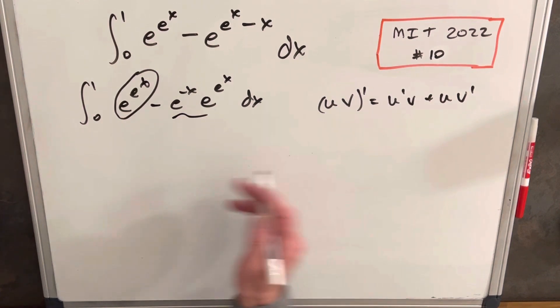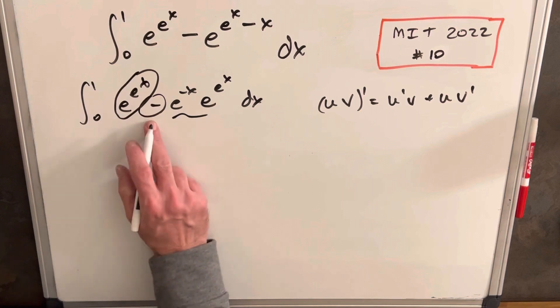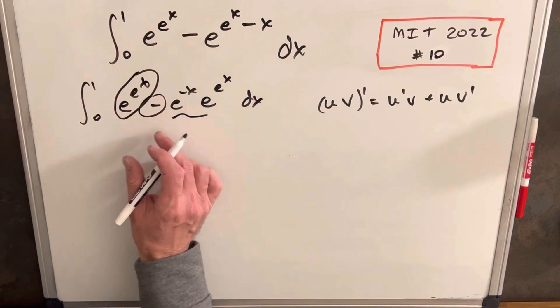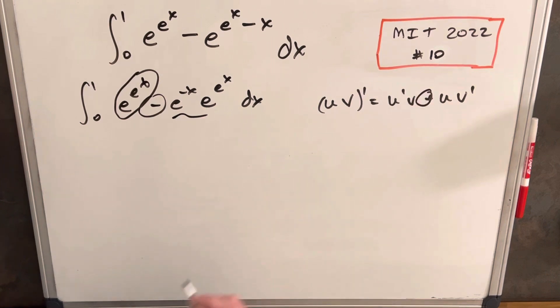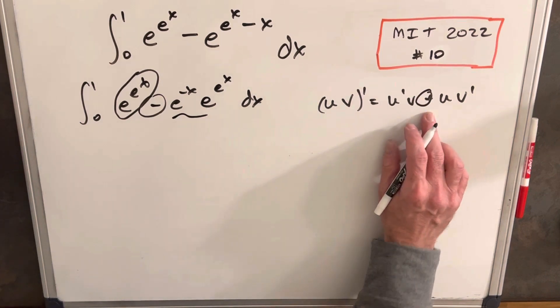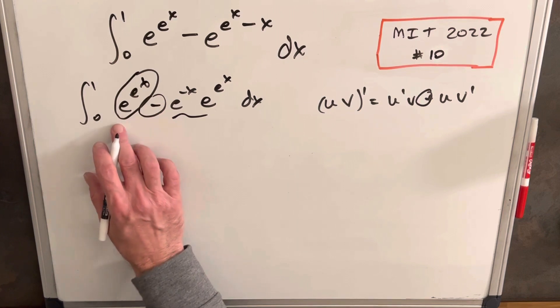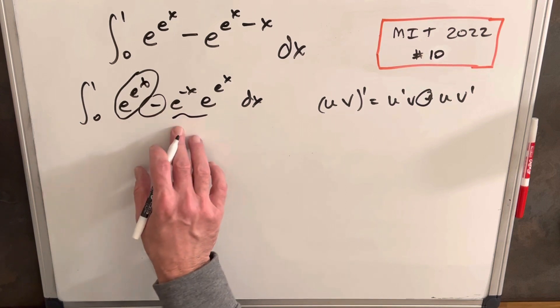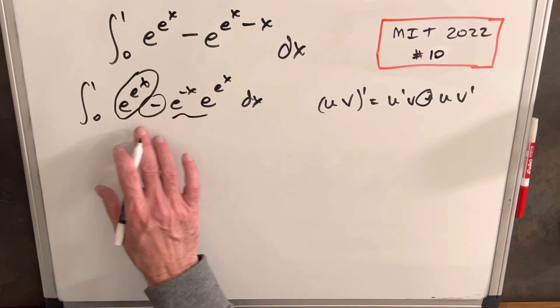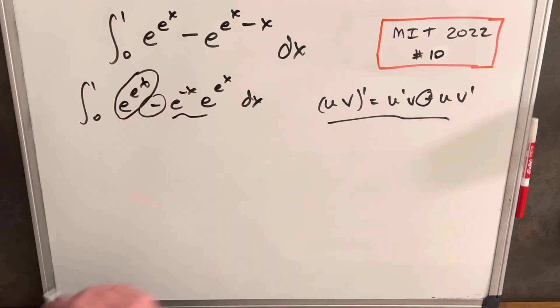The giveaway on the integral is when you have addition or subtraction in the middle. You could split it up, but you don't want to because this is similar to the addition in the product rule. You also want two similar terms. If you had something totally different, it wouldn't make sense, but because in both cases we have e^(e^x) and a bunch of e's, it makes sense that this is probably the product rule in reverse.